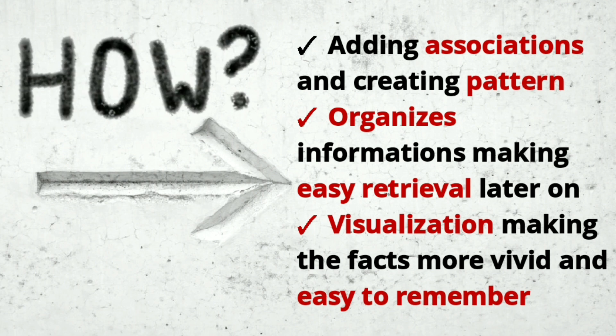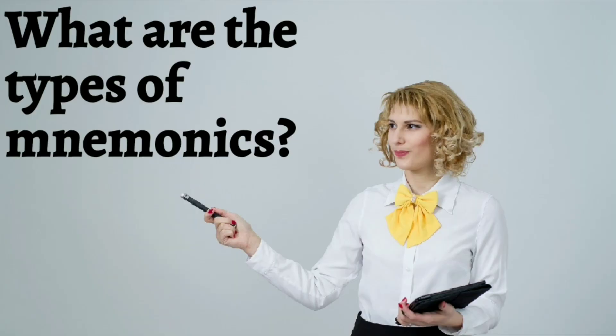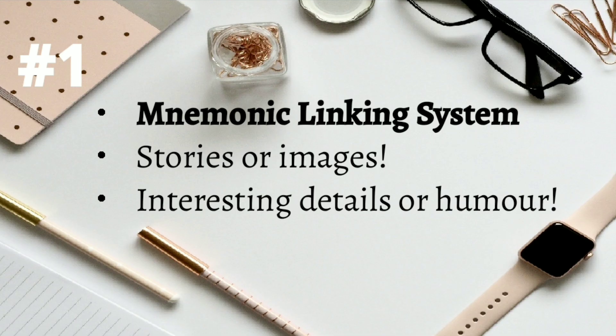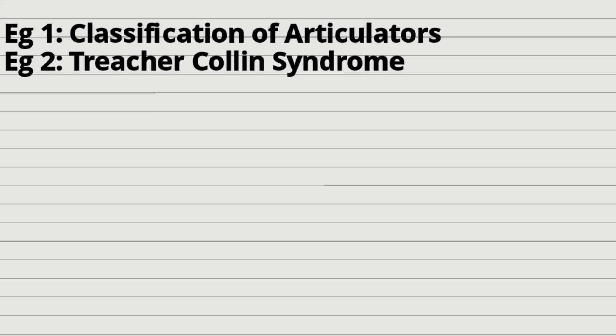So what are the types of mnemonics? Number one: the mnemonic linking system. Here we use stories and images with interesting details or even humor to remember a piece of information. A perfect example is the classification of articulators done by one of our tutors using an interesting story — the link is given in the description box below.